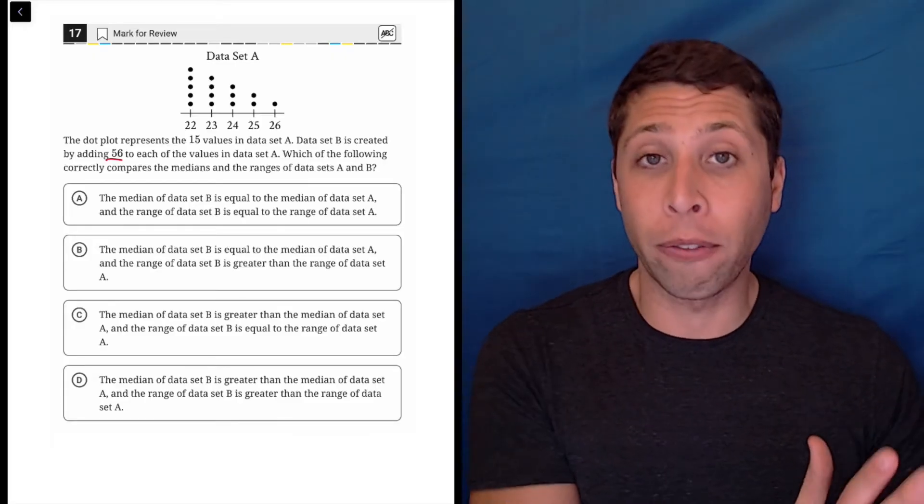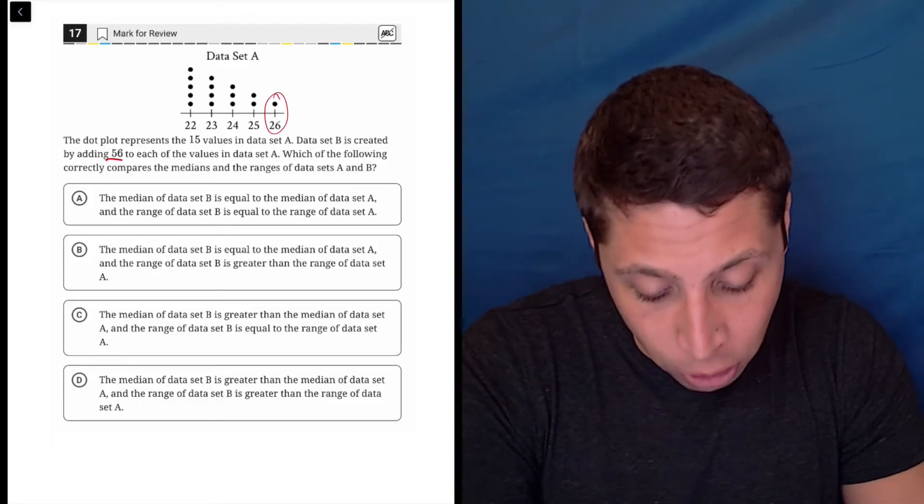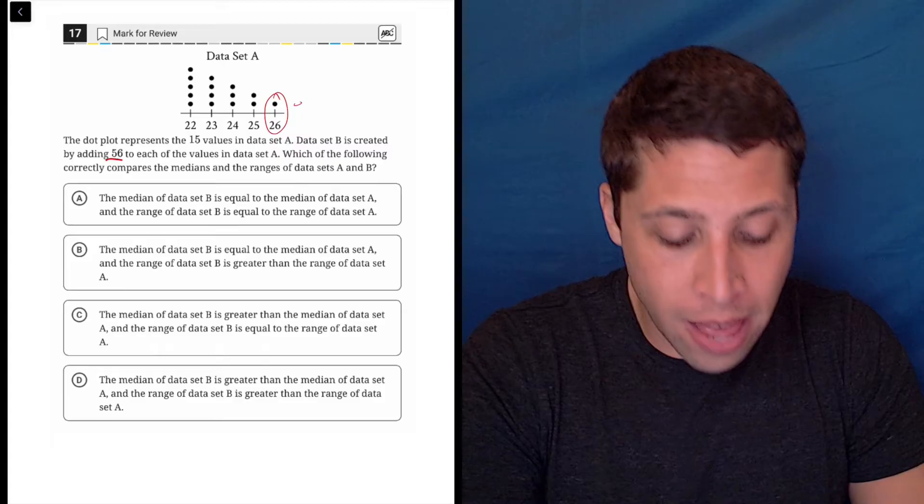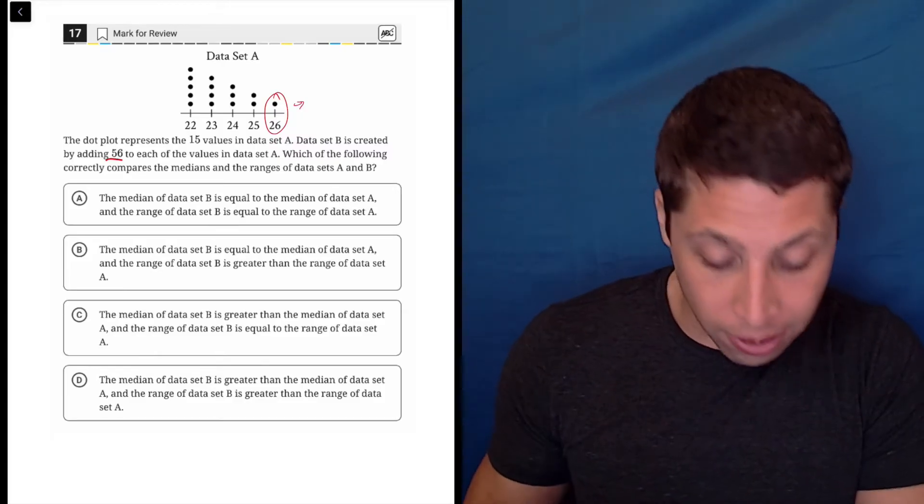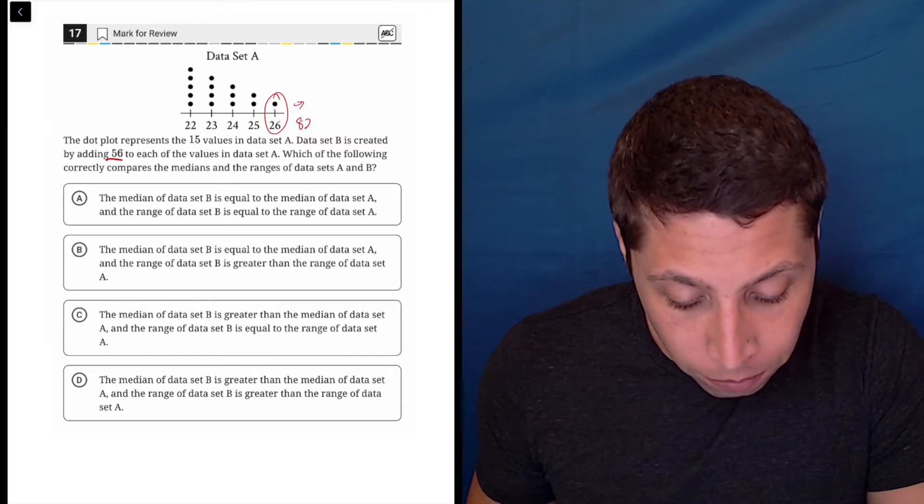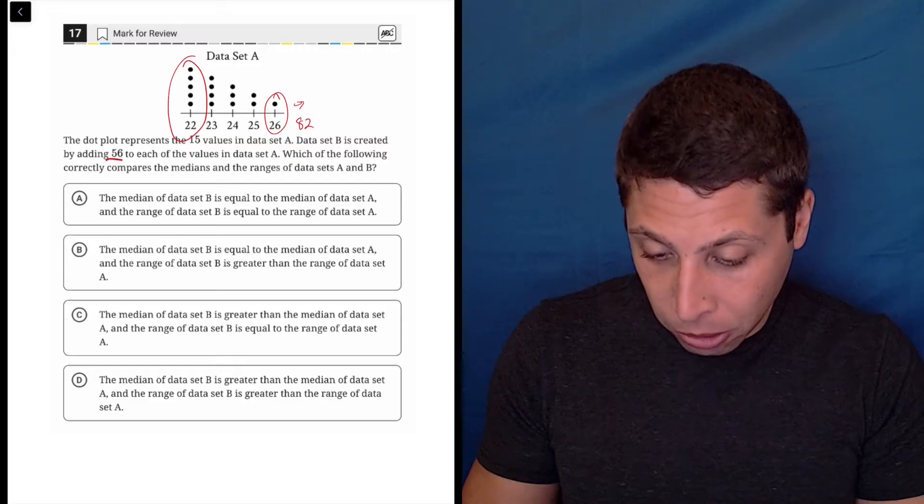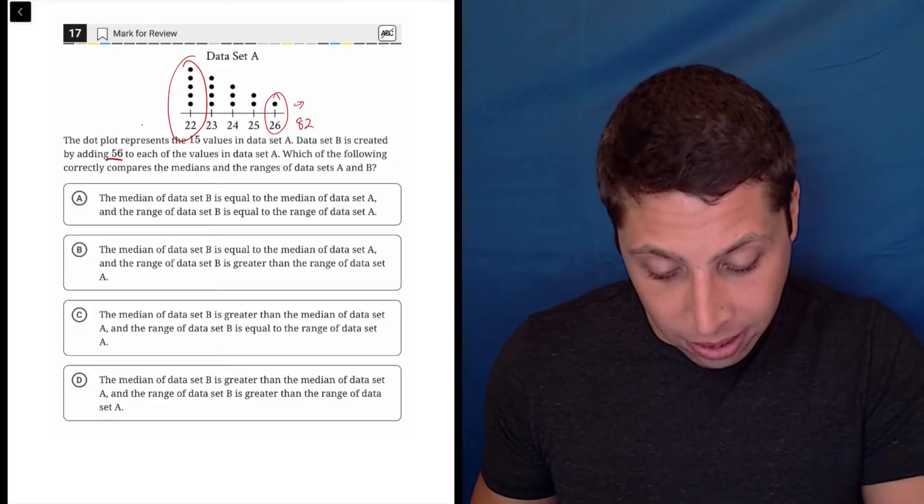So everything is going to shift, right? There's no imbalance here. Everything is shifting by the same amount. So take that point at 26, for example. That's going to shift upward by 56. So 26 plus 56 is 82. But the lower points down here at 22 are also going to shift up. So 56 plus 22 is now going to get us to 78.